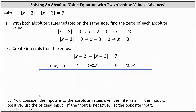Step three: we now consider the inputs into the absolute values over the given intervals. If the input is positive, we list the original input. If the input is negative, we list the opposite input. Let's first consider the input of x plus two over the open interval from negative infinity to negative two — this is the same as when x is less than negative two. Since x plus two is negative over this interval, to remove the absolute value we list the opposite of the quantity x plus two.